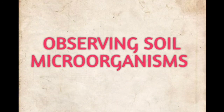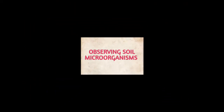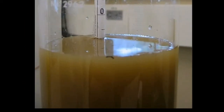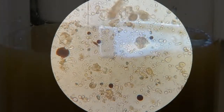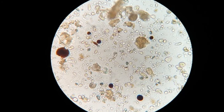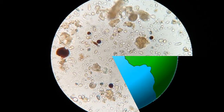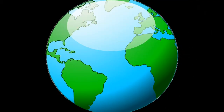Observing soil microorganisms. Collect some soil in a beaker and add some water to it. Wait for some time to allow the soil particles to settle down. Now take a drop of water on a slide and observe it under the microscope. You will observe some microorganisms of different sizes and shapes. From all these activities you will be able to appreciate this amazing world of living organisms.